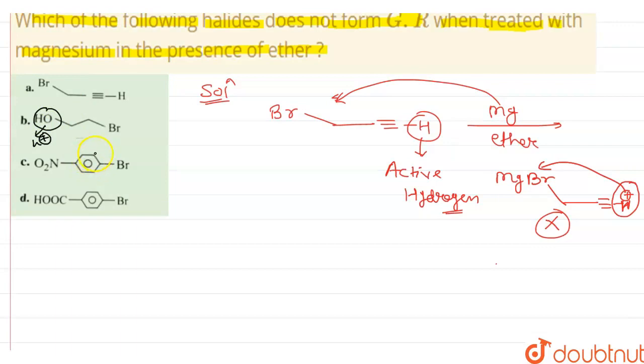Similarly, option C has nitro group, NO2, as an electron withdrawing group and reacts with benzene as a resonance structure. So here also we do not get Grignard reagent.